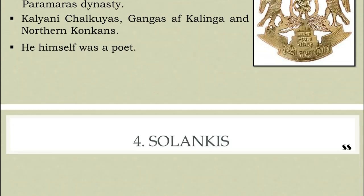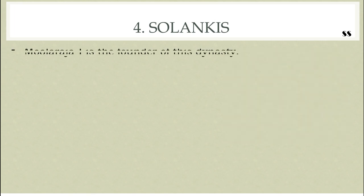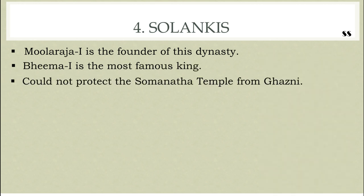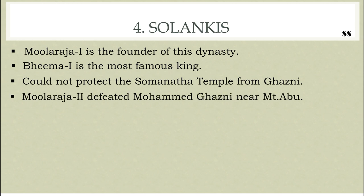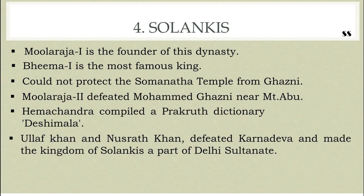The next dynasty is the Solankis. Mularaja I is the founder of this dynasty. Though Bhima I is the most famous king of this dynasty, he could not protect the Somnatha temple from Ghazni's invasion. After him, Mularaja II and Veeradhavala were capable kings. Mularaja II defeated Muhammad of Ghazni near Mount Abu. During the rule of this dynasty, the famous Jain scholar Hemachandra compiled a Prakrit dictionary called Deshimala. Ullaf Khan and Nusrat Khan, military generals of Alauddin Khilji, defeated Karnadeva and made the kingdom of Solankis a part of the Delhi Sultanate.